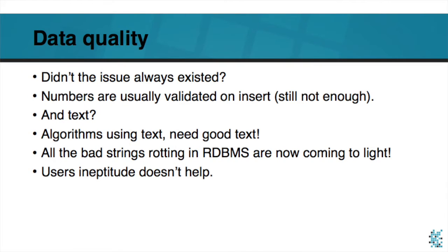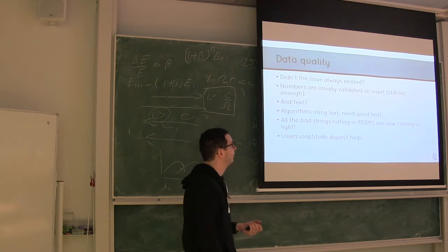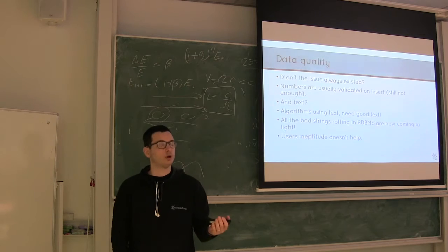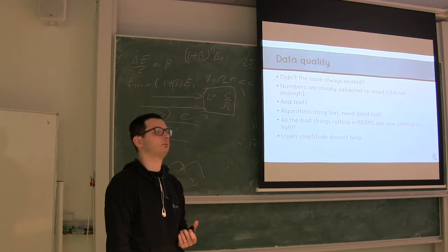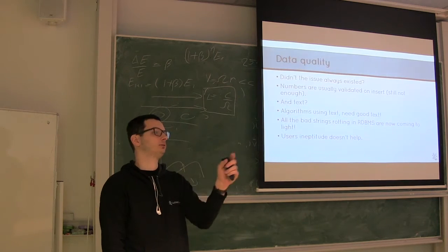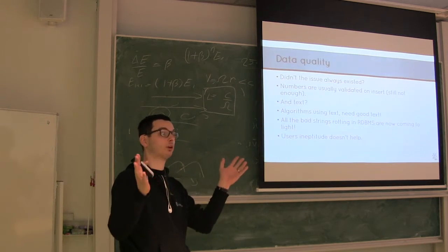One question that I get usually here is, but didn't the issue always existed? I mean, what has machine learning has to do with data quality? Who knows how a traditional database works? Here, there, somebody. Well, anyway, just think, who knows how Excel works? Yeah, more, okay, so just think of like Excel, but where you give a type to your column.